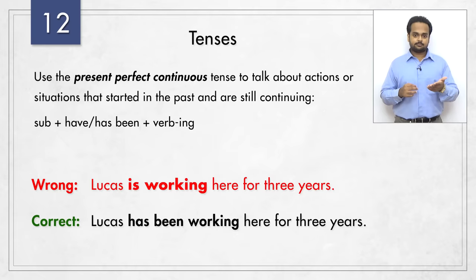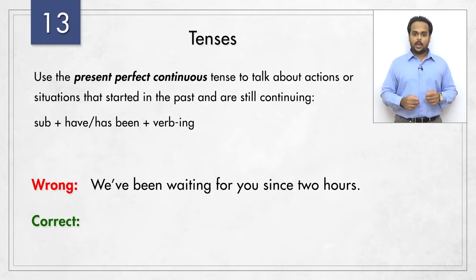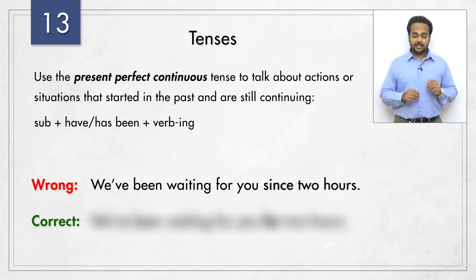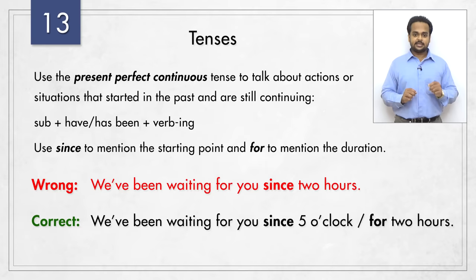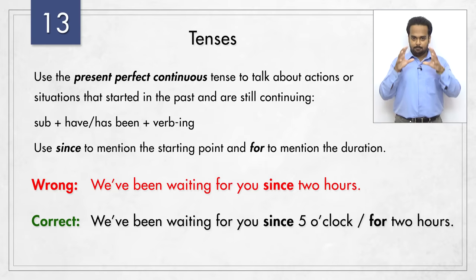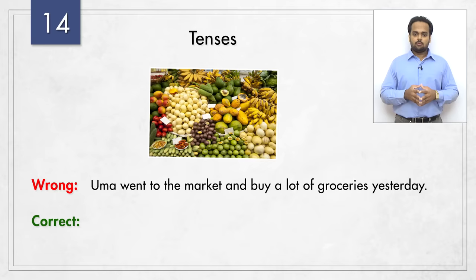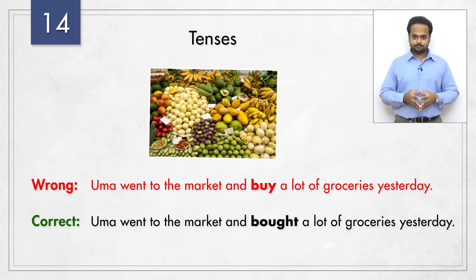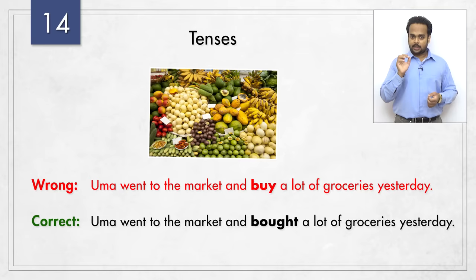So how about this – 'we've been waiting for you since two hours.' It looks like a correct sentence – it's in the present perfect continuous tense – but can you spot the error? It should be 'we've been waiting for you for two hours.' You use 'since' if you mention the exact time that the action started – 'we've been waiting for you since five o'clock.' But if you say the duration, that is the amount of time, you use 'for.' Here's sentence number 14 – 'Uma went to the market and buy a lot of groceries yesterday.' The correction: 'Uma went to the market and bought a lot of groceries yesterday.' Both actions – went to the market and bought groceries – happened in the past, so don't forget to apply the correct tense to all the verbs in a sentence.